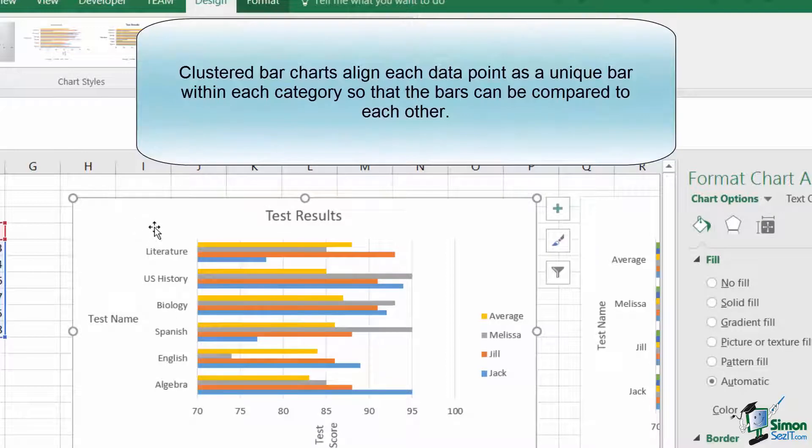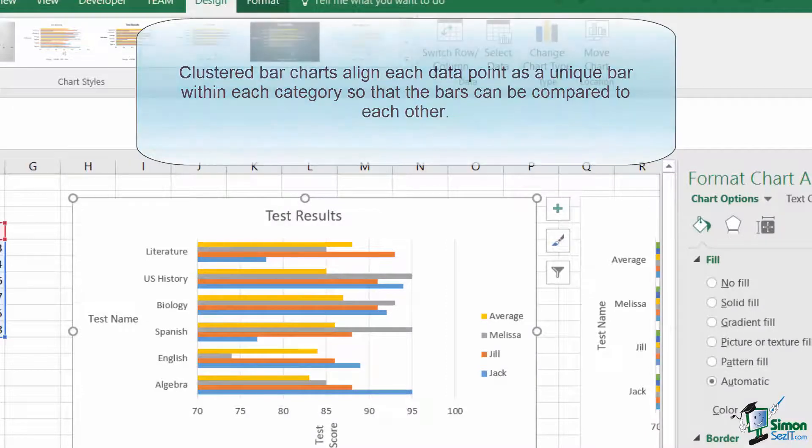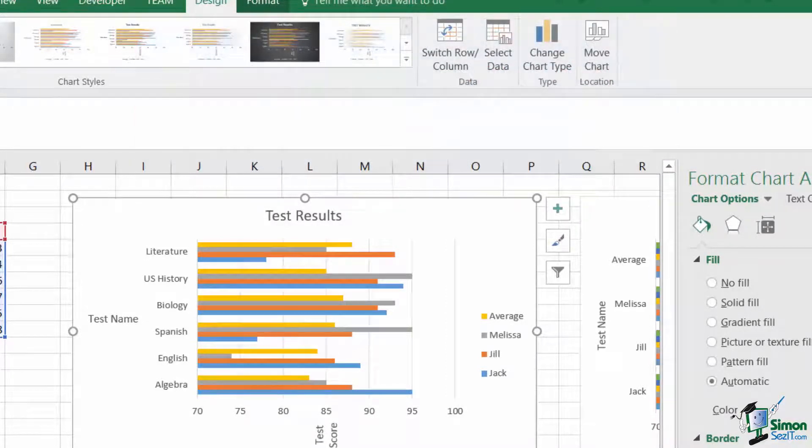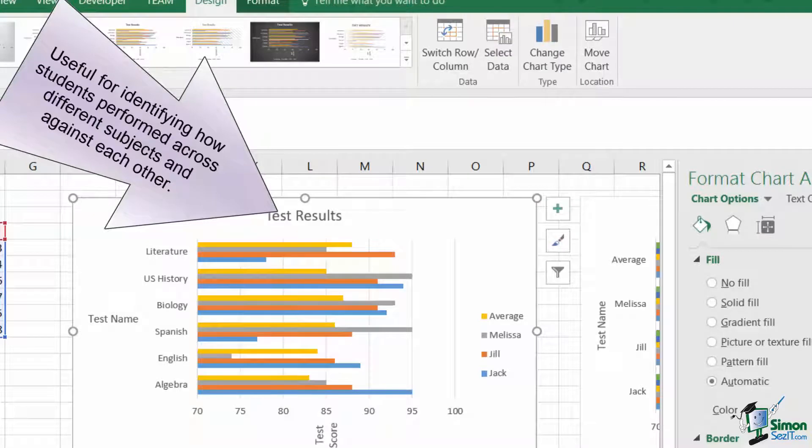For comparison, this chart type is great for looking at how two different values that should be similar compare. For example, here I have test scores for three different students across six different exams, as well as the average for the class. You could place each of the three students' data series and use a clustered bar to compare how they've performed against each other and against that class average.